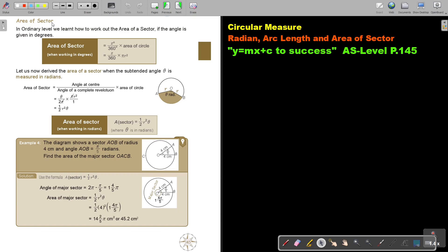Area of a sector. In ordinary level we learned how to work out the area of a sector if the angle is given in degrees. So it's the angle over 360 multiplied by the area of a circle. And what is the area of a circle? Pi r squared.